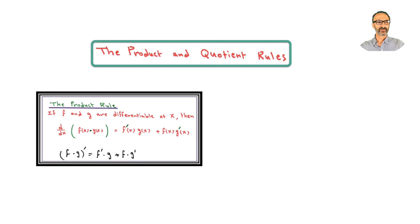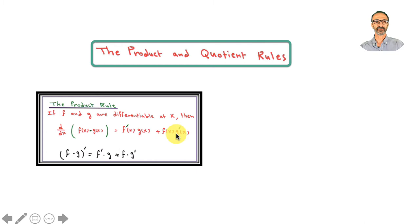Today we're going to talk about the product and the quotient rules. The product rule says if f and g are differentiable at x, then the derivative of the product of f times g is a sum of two different products: f prime times g, and f times g prime.